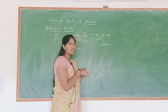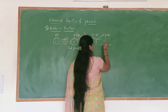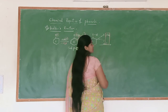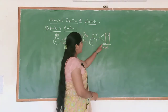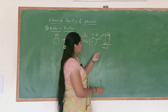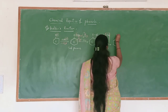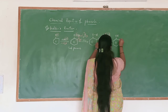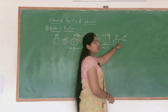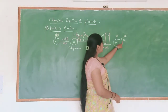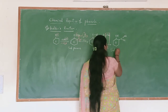Now this sodium salt of salicylic acid will undergo acidification — that is, addition of H+ using HCl. The bond between oxygen and sodium breaks; sodium reacts with Cl of HCl and NaCl is formed. Then hydrogen is added to oxygen. We will get the final product — C=O with OH, that is a carboxylic acid. The compound is known as salicylic acid.